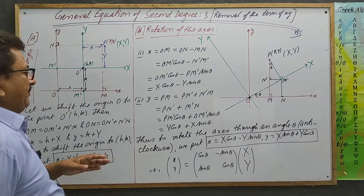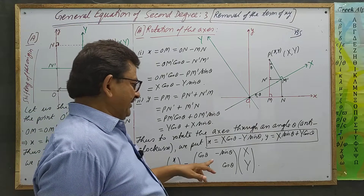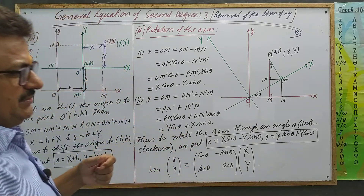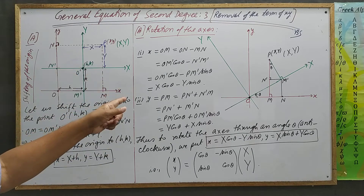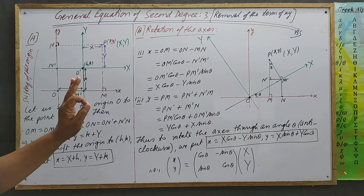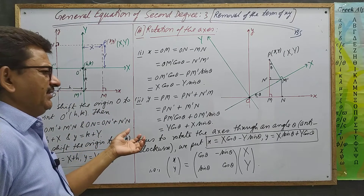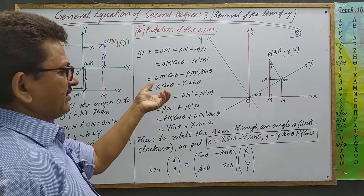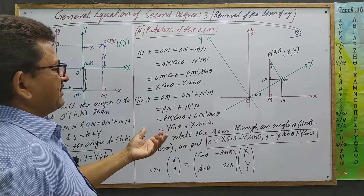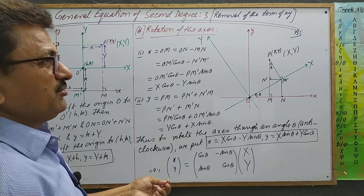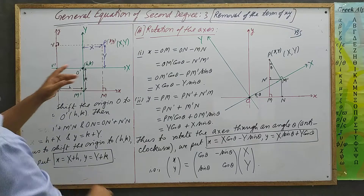So I understand that you are aware of what origin shift and rotation of axes do. But why do we do this? If you know, that is very good. You should know these important notes — it is a very basic concept. What is the mechanism when we rotate and substitute X and Y? I will tell you the original topic.